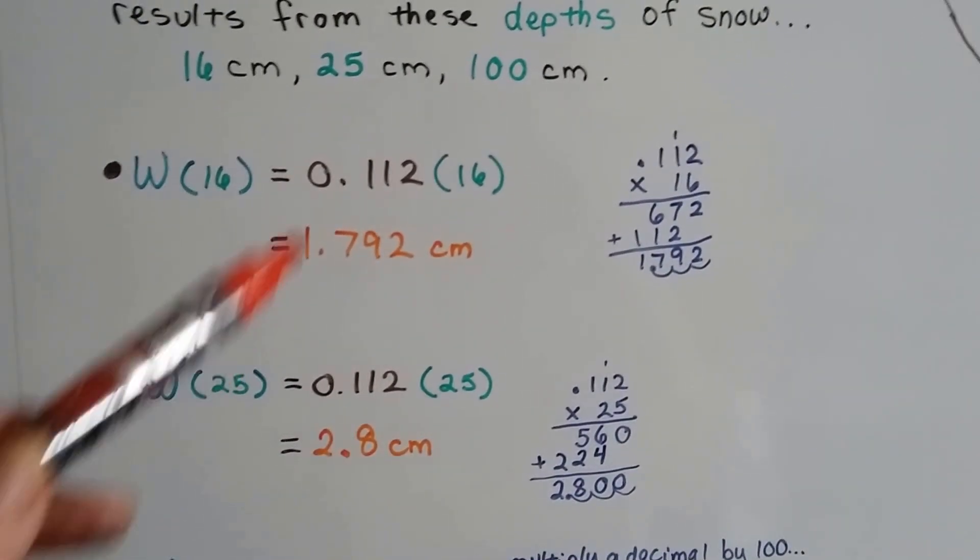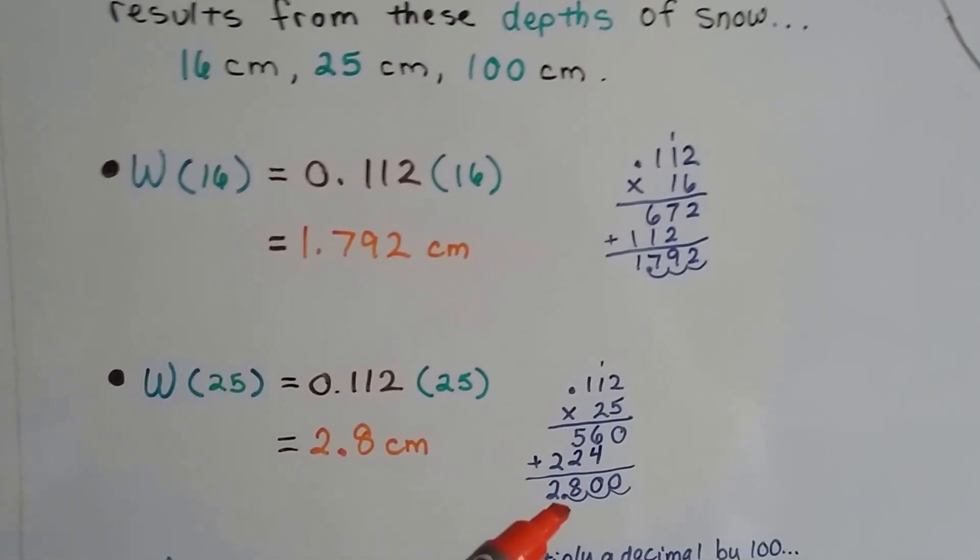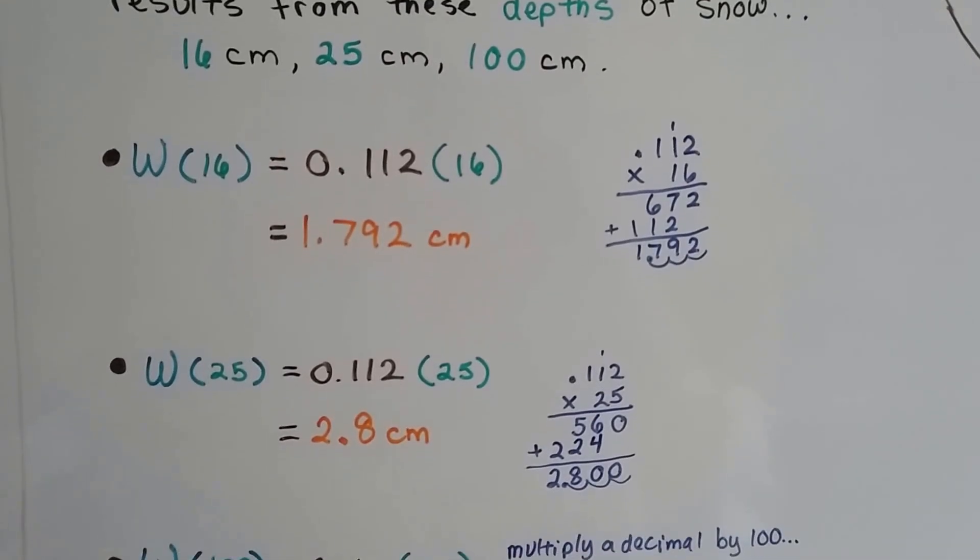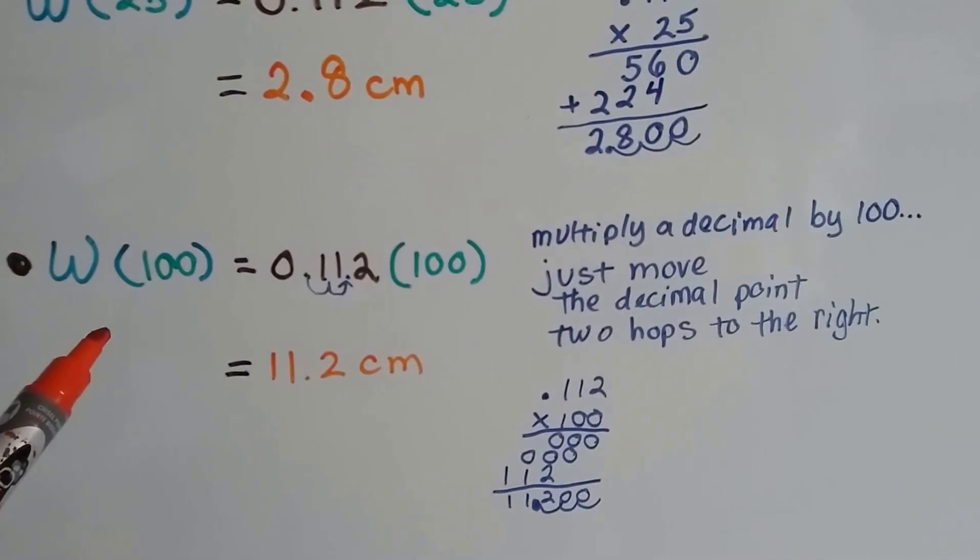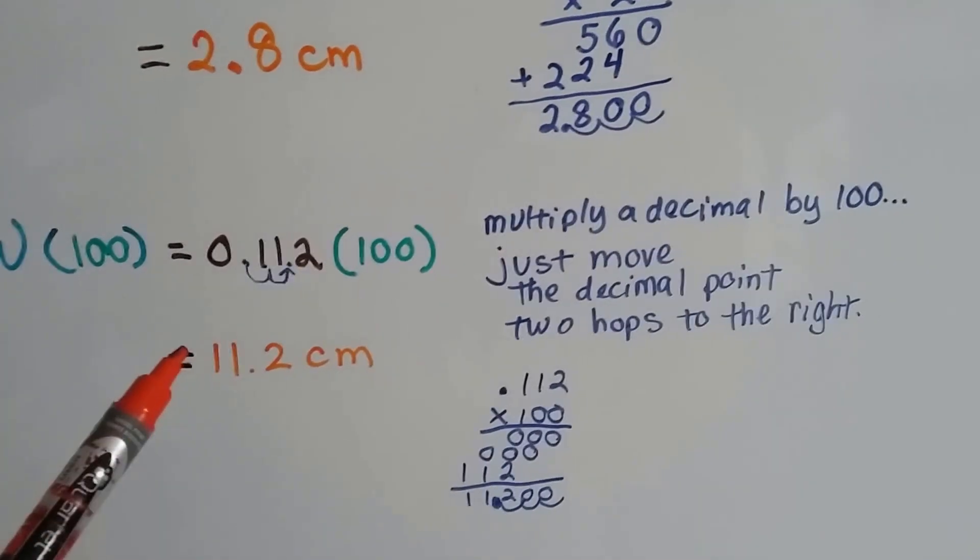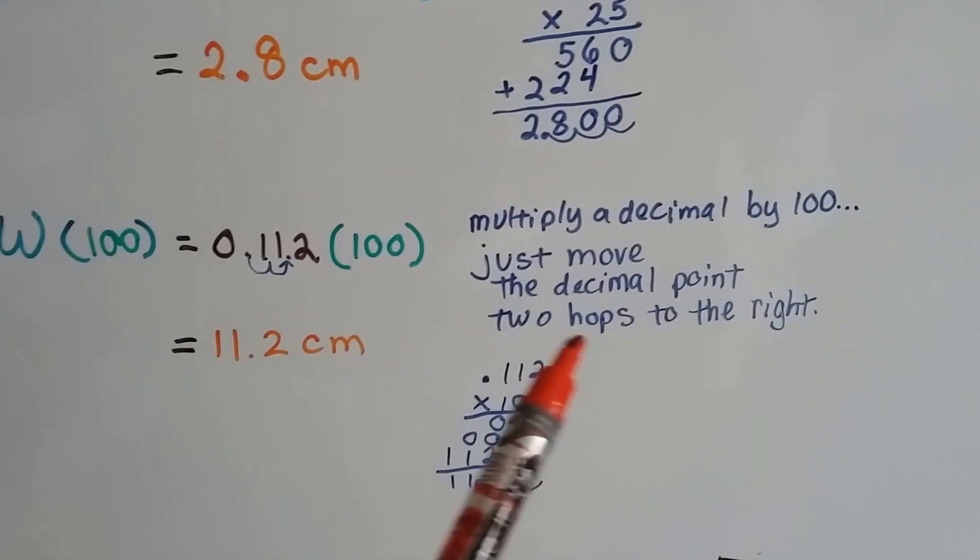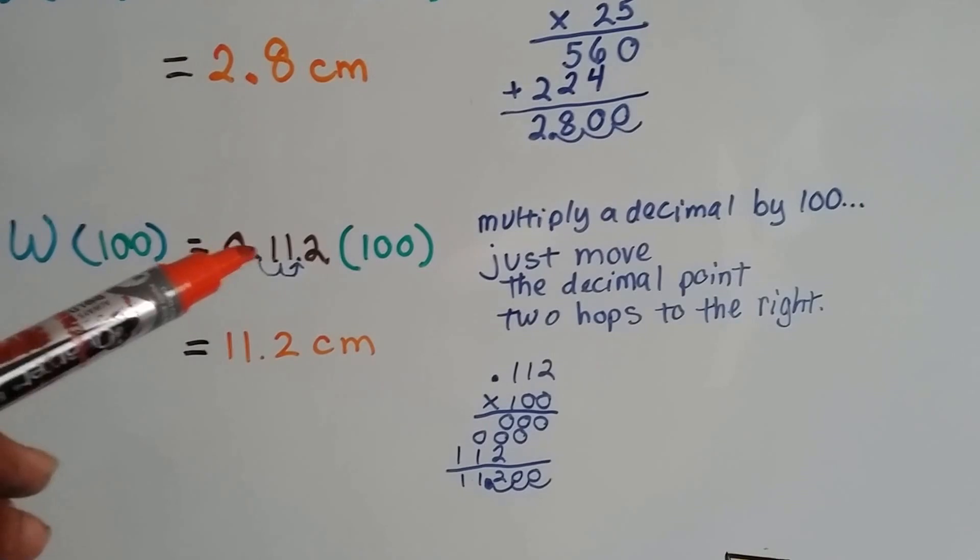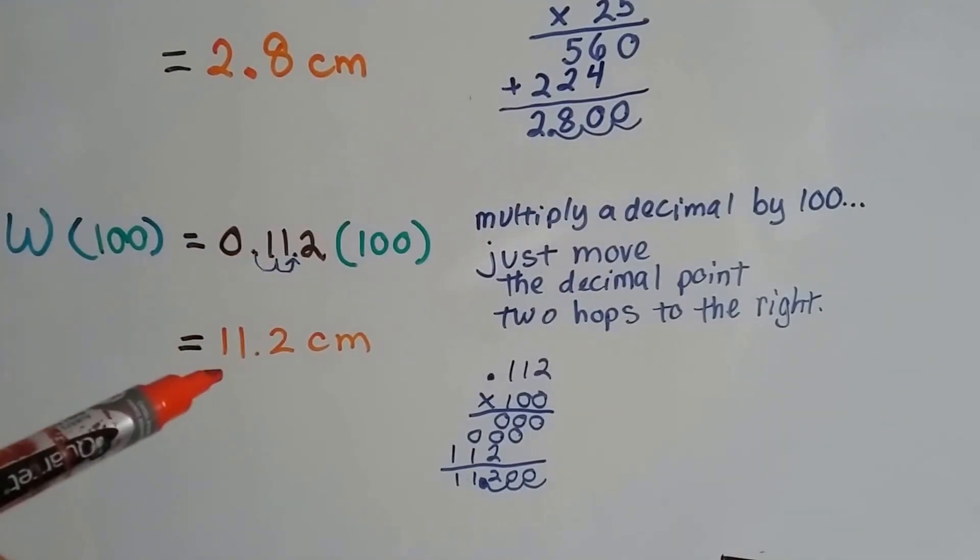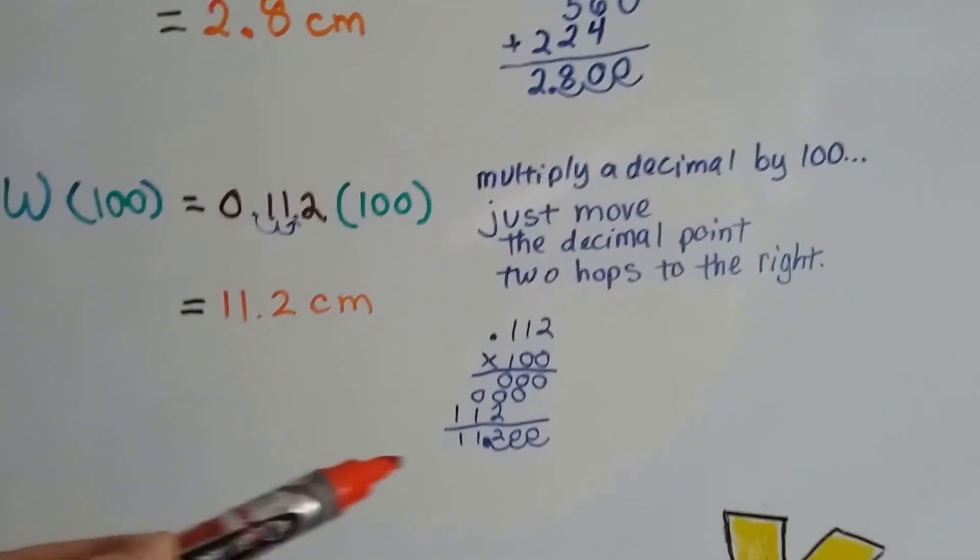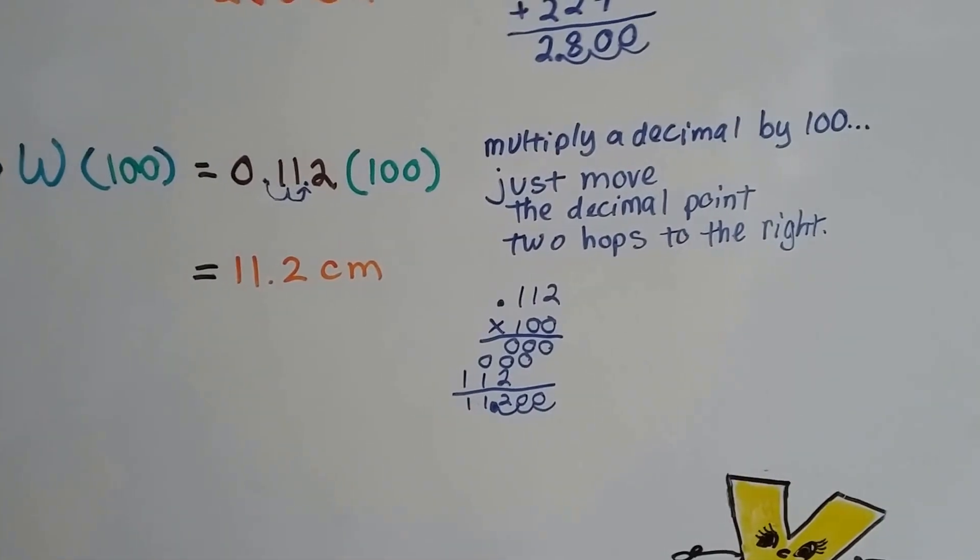We can plug in the 25 centimeter one for d in each place. We do our multiplication and it comes out as 2.8 centimeters. We plug in the 100 in the place of d. We don't even need to multiply because when you multiply a decimal by 100, there's two zeros so we go 1, 2 decimal hops to the right and we're at 11.2 centimeters. We could have done the multiplication, but we'd still come out with 11.2 centimeters.